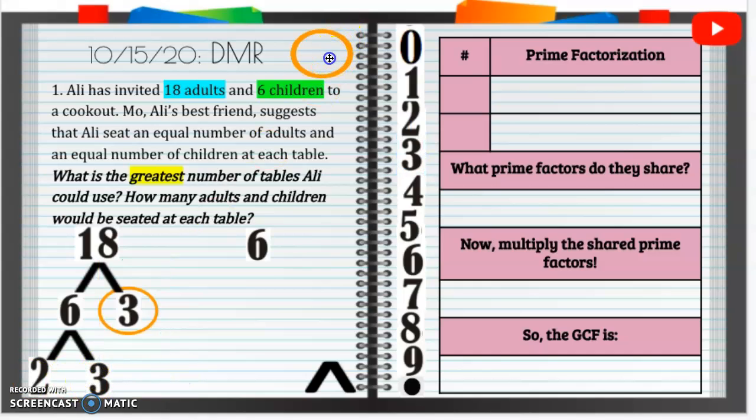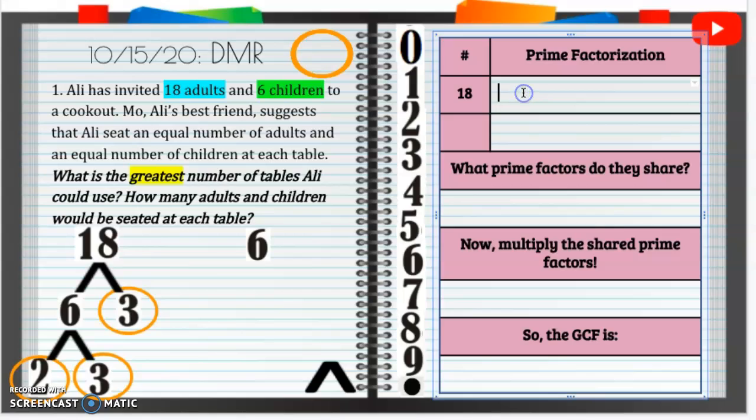3 again is a prime number. So we're going to circle it because we can't break it down anymore. Same thing with that 2. We cannot break it down anymore. Alright, now, we've finished our prime factorization of 18, which is, in order from least to greatest, we have a 2 and then a 3 and a 3. So it's going to be 2 times 3 times 3.